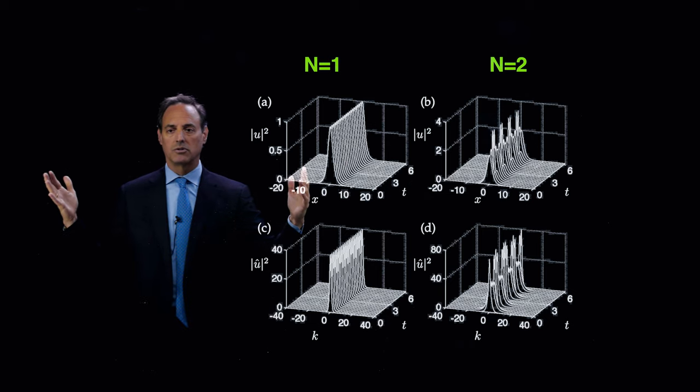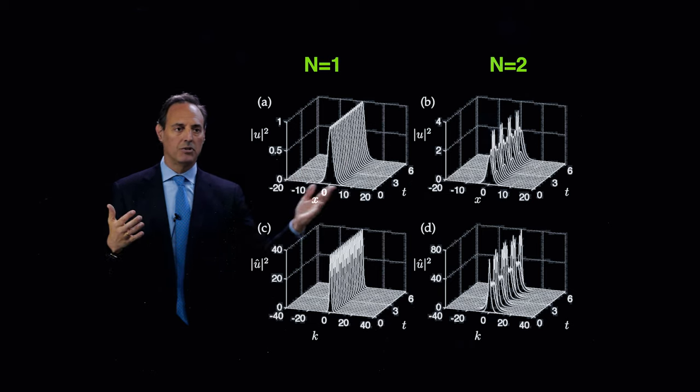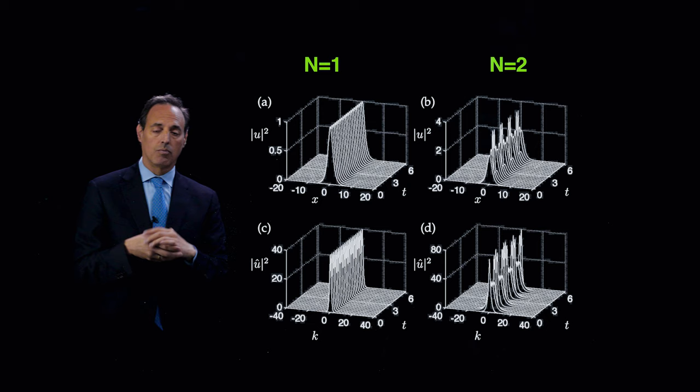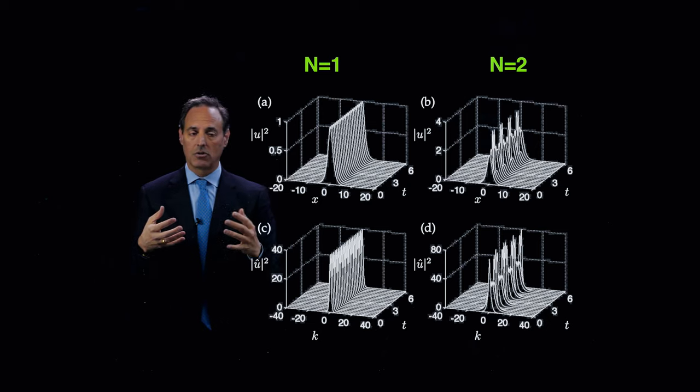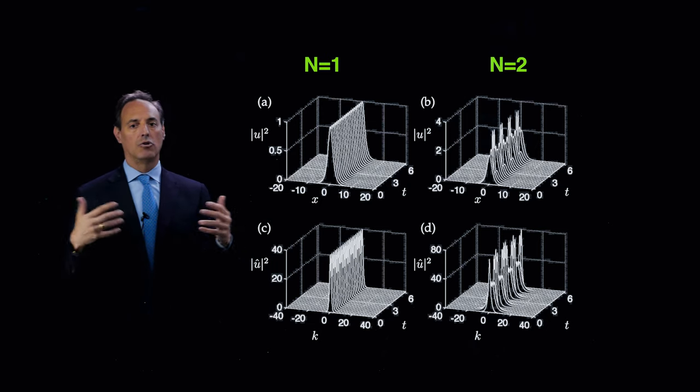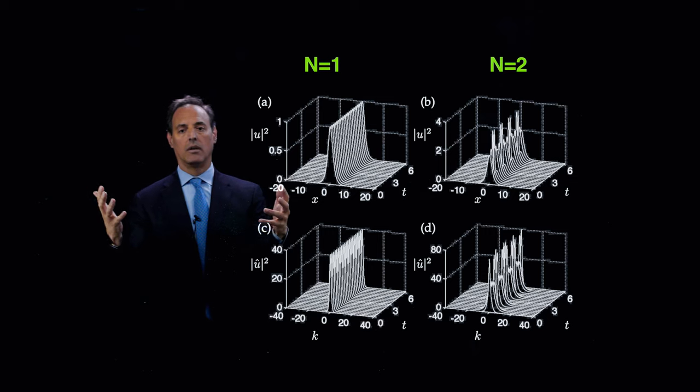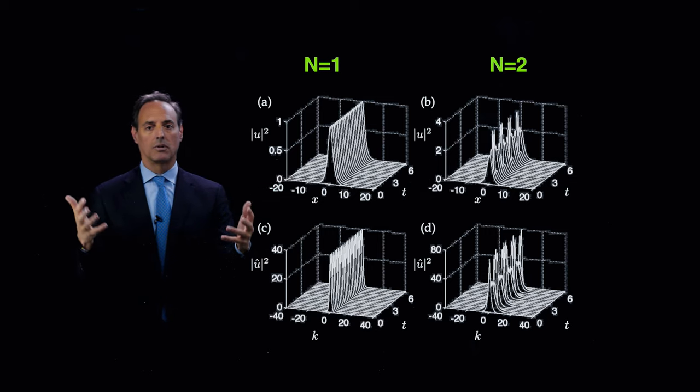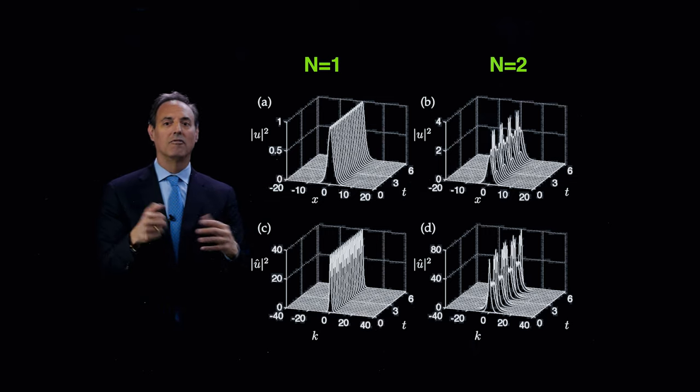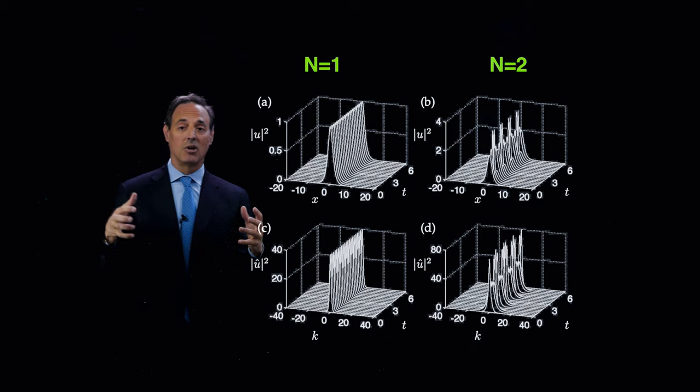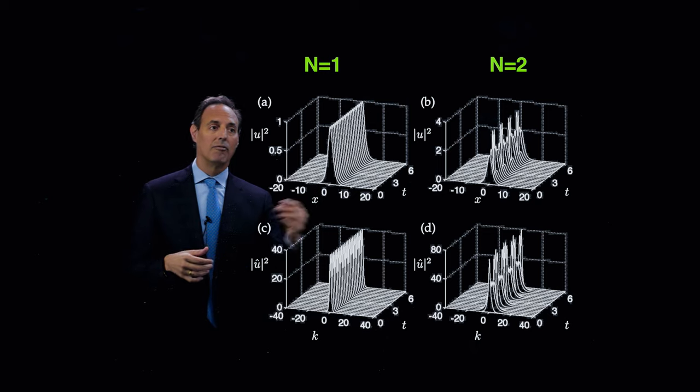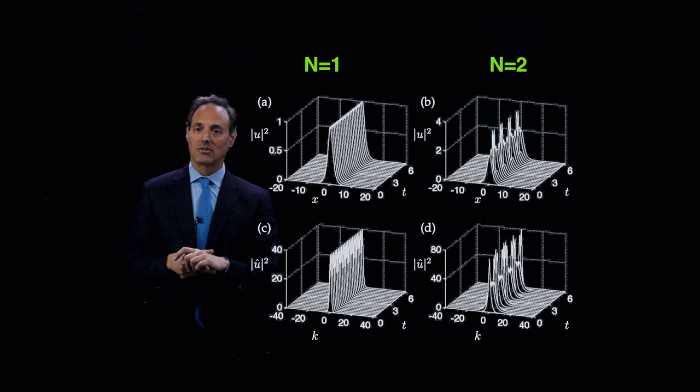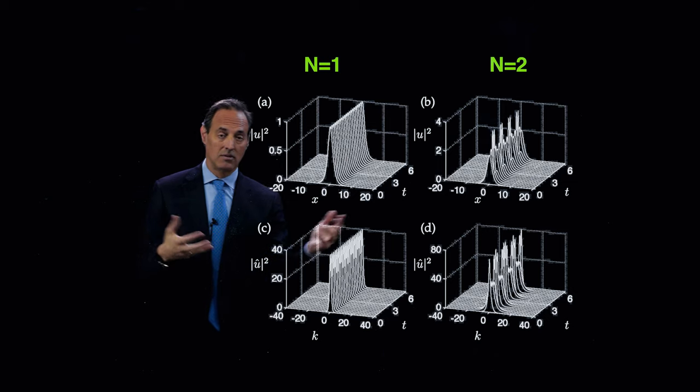Because these functions don't look like Fourier modes at all. Fourier modes are these global structures, sines and cosines. These are highly localized. And of course, what Fourier theory tells you is that you can represent any function on a 2π periodic domain with an infinite sum of sines and cosines. But the whole point is I'm trying to stay away from the infinite sum and make it as small a sum as possible. And Fourier modes are not the best set of modes to use for such dynamics.